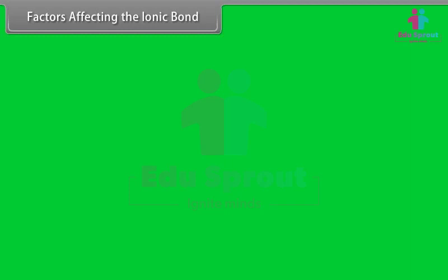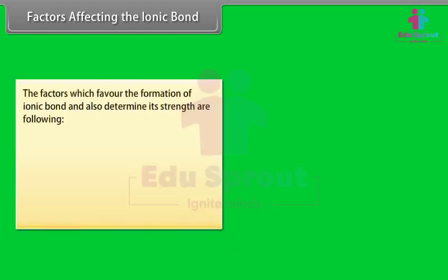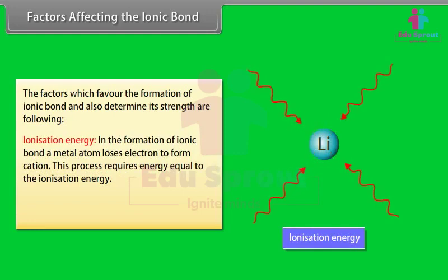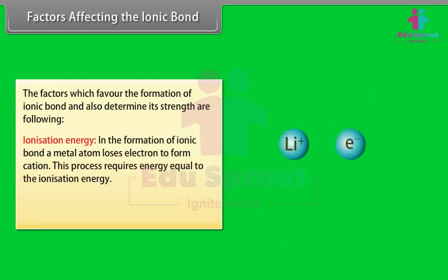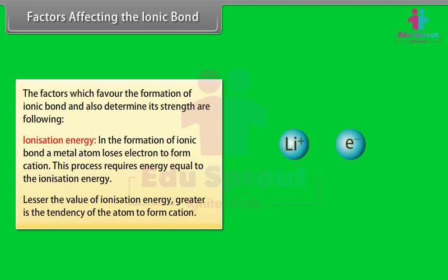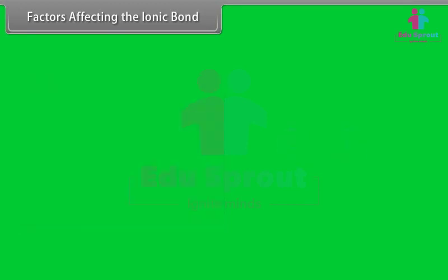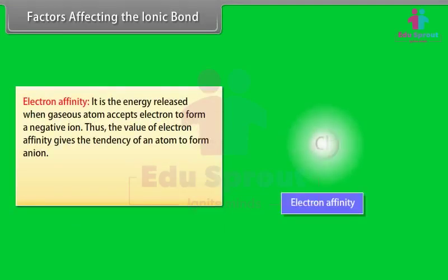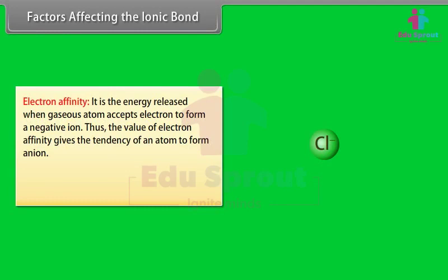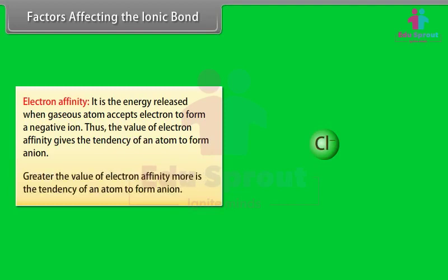The factors which favor the formation of an ionic bond and determine its strength are: ionization energy — a metal atom loses electrons to form a cation, and lesser the value of ionization energy, greater is the tendency to form a cation; and electron affinity — it is the energy released when a gaseous atom accepts an electron to form a negative ion. Greater the value of electron affinity, more is the tendency of an atom to form an anion.